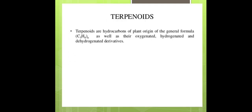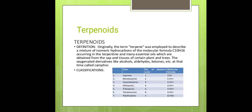Terpenoids are the hydrocarbons of plant origin of general formula C5H8N, as well as their oxygenated, hydrogenated and dehydrogenated derivatives. Originally, the term 'terpene' was employed to describe a mixture of isomeric hydrocarbons of the molecular formula C10H16, occurring in turpentine and many essential oils obtained from the sap and tissues of certain plants.